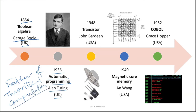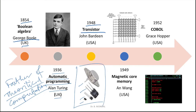Alan Turing proposed different models of computing — basically theory, because at that time electronics as we understand it today had not developed sufficiently. But in 1948, the transistor was invented by John Bardeen in the USA. This was a huge step forward towards the development of electronic computers, changing the way computer development was progressing before 1948.